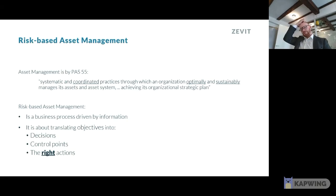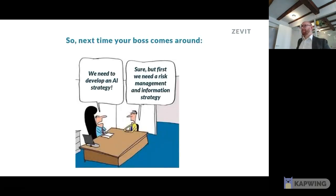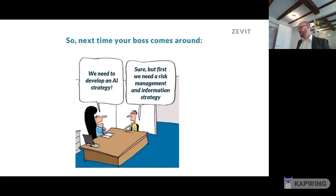When we talk about risk-based asset management, it needs to be a process-driven approach based on information — it's not just about making sure we take decisions. We also need to set up some control points in order to do the right actions. That has actually been a challenge: with all the information we have available, how do we take the right actions? And before we go on — maybe the next time your boss comes around — the foundation needs to be set up. It's really great that there's an ask for an AI strategy, but in essence it's about how we manage knowledge and information in the business fundamentally.